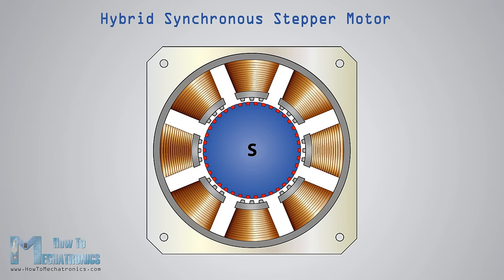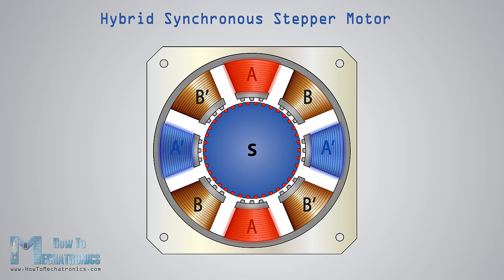This is the front view of a commonly used hybrid stepper motor which has eight poles on the stator that are activated by two windings, A and B. If we activate winding A, we will magnetize four poles, two of which will have south polarity and two north polarity.